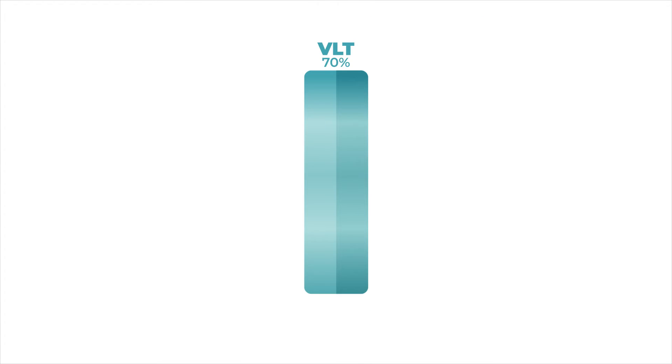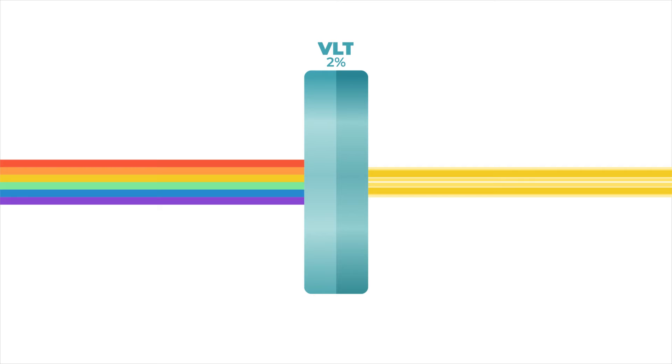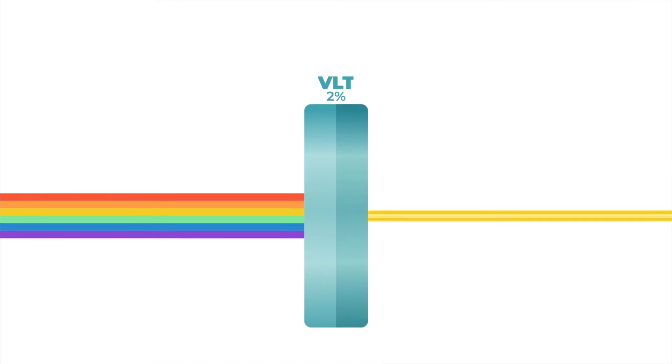A material with high VLT allows more visible light to pass through, making it transparent. On the other hand, low VLT means less light passes through, making the material opaque.